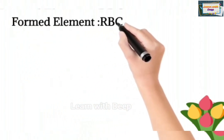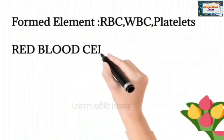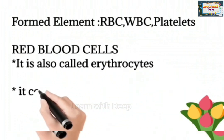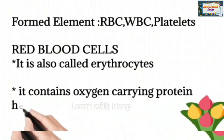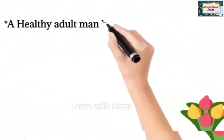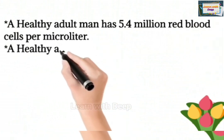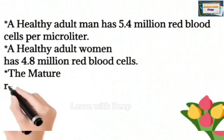Formed elements include RBCs, WBCs, and platelets. Red blood cells, also called erythrocytes, contain the oxygen-carrying protein hemoglobin. A healthy adult man has 5.4 million red blood cells per microliter, and a healthy adult woman has 4.8 million red blood cells per microliter.